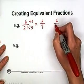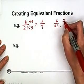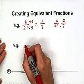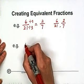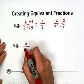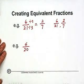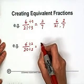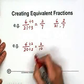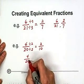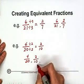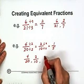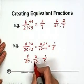So we can see six over 21 and two over seven are equivalent fractions. Also, if we have four over 20 — both even numbers — we divide by the common factor two to get two over ten. So four over 20 and two over ten are equivalent. And if we divide by two again, we get one over five. So all three of them are equivalent.